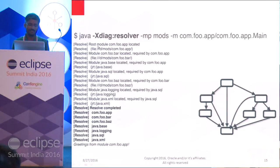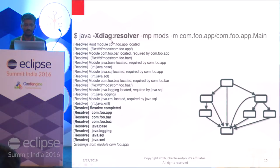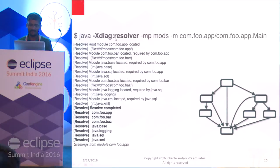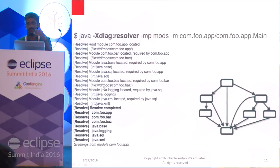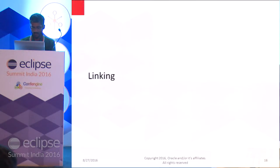There is another enhanced option in the java command: '-Xdiag:resolver'. When you add this option, it shows the module discovery path — how each module is found, the order of discovery. This is useful for debugging module resolution.